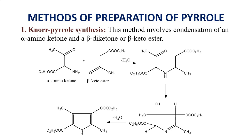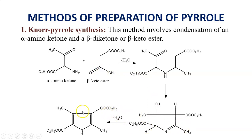Now let us discuss the different methods for preparation of Pyrrole. The first method is Knorr Pyrrole Synthesis. In this method, there is a condensation of an alpha-amino-ketone with a beta-keto-ester to give substituted Pyrrole. The alpha-amino-ketone attacks on the carbonyl carbon and we get a cyclic structure through ring closure, giving 2,5-substituted Pyrrole.